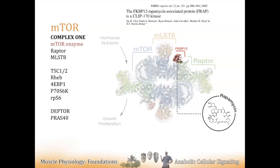Rapamycin and FKBP12 — rapamycin is exogenous, not inside you. It's a big carbon compound produced by bacteria. It interacts with mTOR at FKBP12. That's why the names RAFT1 and FRAP include FKBP12: FRAP is FKBP12-rapamycin associated protein — that's mTOR. After around 2002, nearly all the literature just calls it mTOR. When you encounter early literature using FRAP or RAFT1, know that's what they mean.